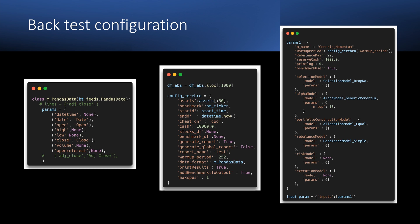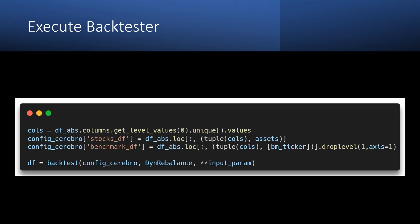Then we define all our models and parameters. Before we start the backtest, we need to assign to our configuration two datasets: one with the data of all our assets and another one with the benchmark data.